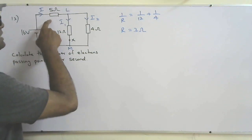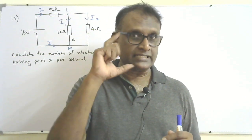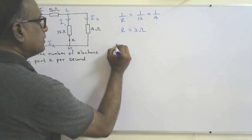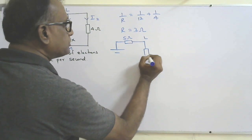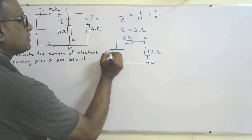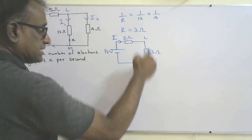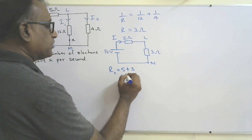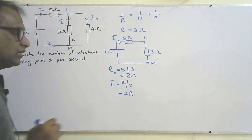The 3 ohm equivalent is in series with the 5 ohm resistor. Redrawing the circuit: 5 ohms in series with 3 ohms across junctions L and M. Total resistance R_naught = 5 + 3 = 8 ohms. Current I = EMF/R = 16/8 = 2 amperes.